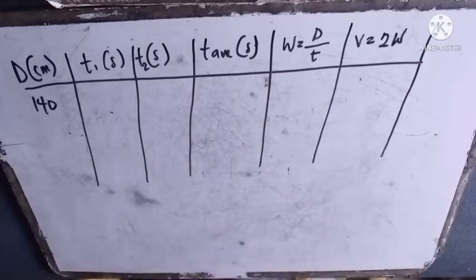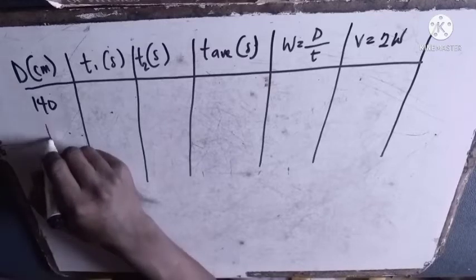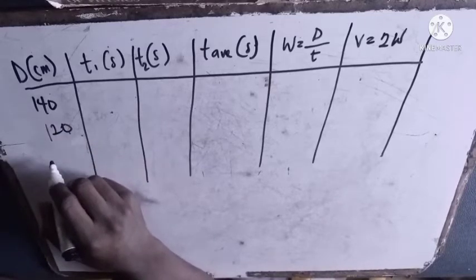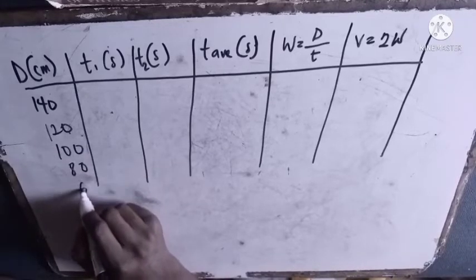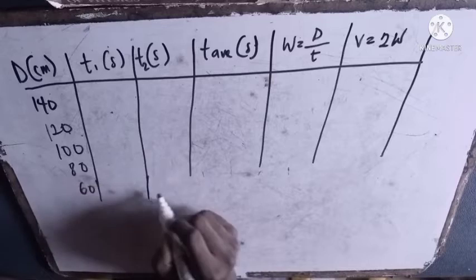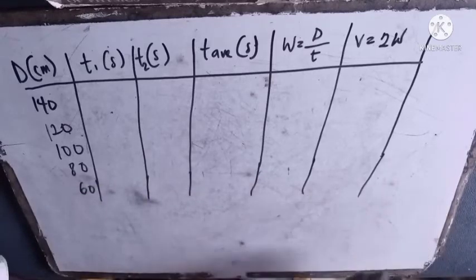Also calculate v equals to 2w. Please make sure you read your questions in your practical so that you know what you are doing. You do 140 and subsequently you have to do it more than once - 140, 120, reduce the length, 100, 80, 60.